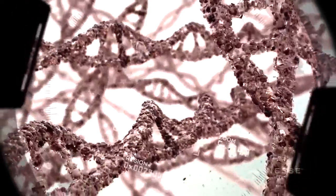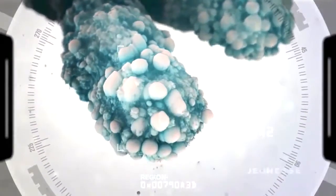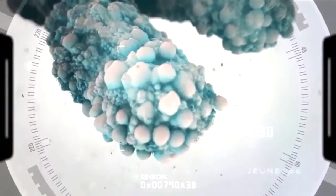Telomeres are made of repetitive DNA sequences that become the protective caps or ends of our chromosomes. Their duty is to protect our DNA.